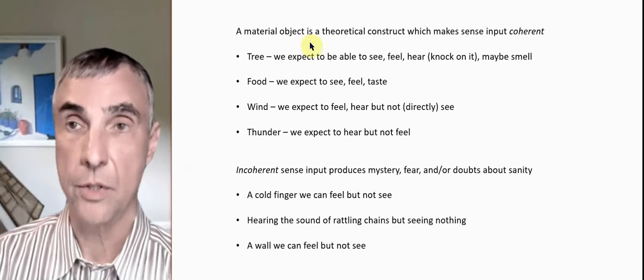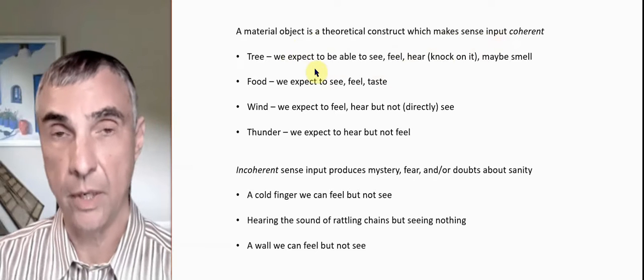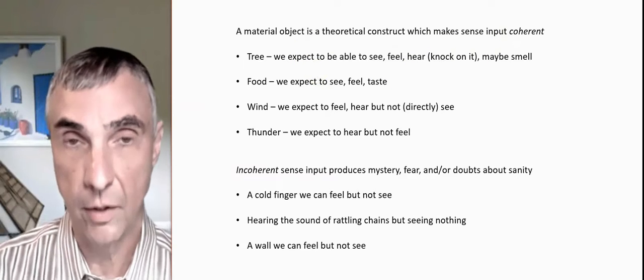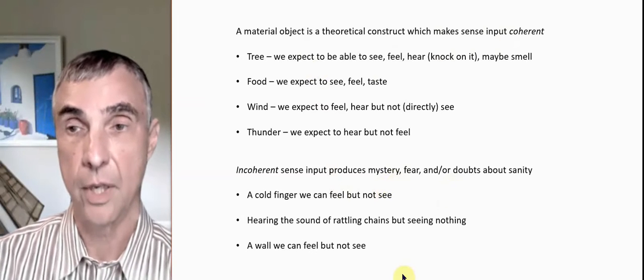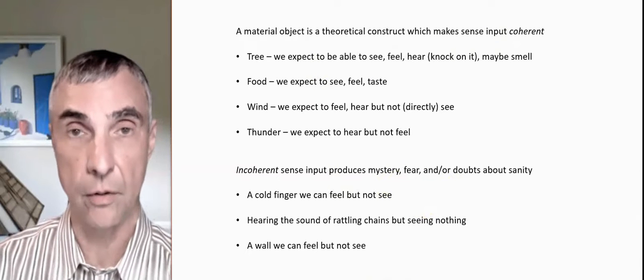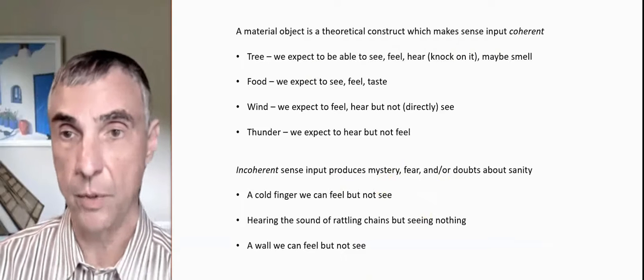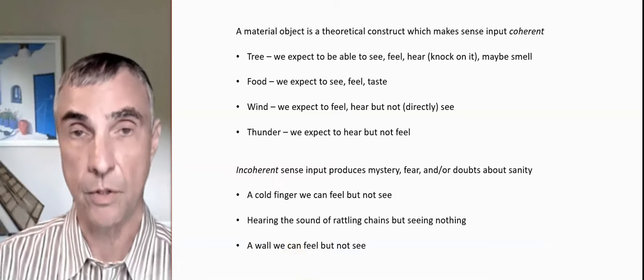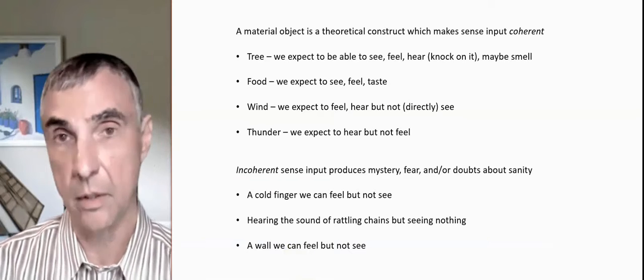So a material object is a theoretical construct which makes sense of coherent input. So when we see something and hear it, and we expect to hear it, when the senses are coherent, we say the thing is there. Now, incoherent sensory input causes fear, mystery, doubt. For instance, something like in a horror movie, a person is walking and they can feel a cold finger on their neck, but they can't see anyone. Or they hear the sound of rattling chains, but there's no one around them. Or imagine a wall, we can feel, but we can't see. All those things would engender fear, because we've been accustomed that certain sensory input goes together and others do not.